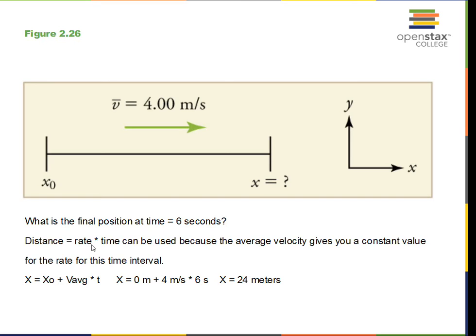This problem is a special case. We're given the average velocity four meters per second. Well, if we start at zero, we've got four meters per second multiplied by the time, that gives us 24 meters of progress. So our position is at 24 meters at the end of this interval.